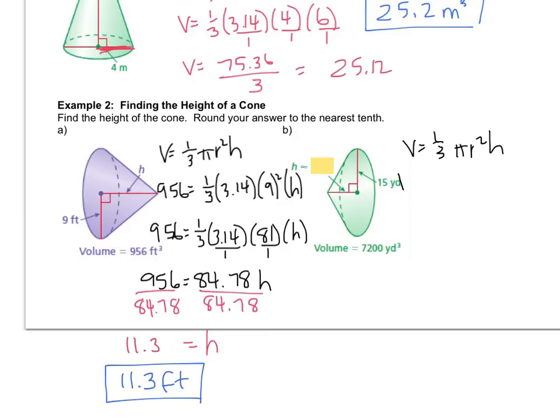So now I plug in what I know. I know that the V is 7200. One-third π r is 15. And I don't know the h. So I'm going to do all of these calculations and then do inverses. So if I, oh whoops, I have to do exponents first. So I've got 7200 equals one-third times 3.14 times 15 squared is 225 times h.